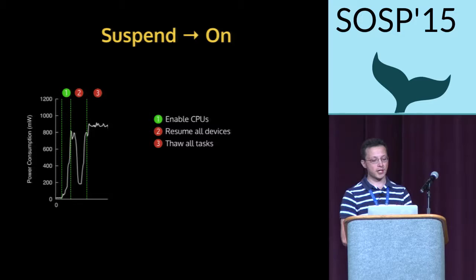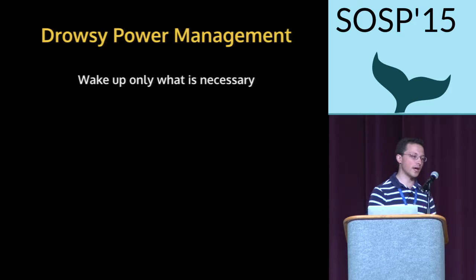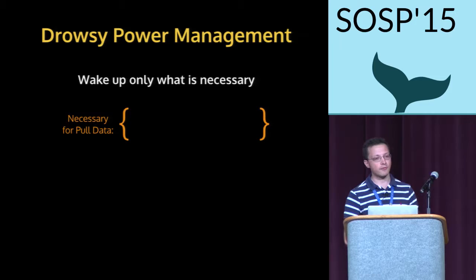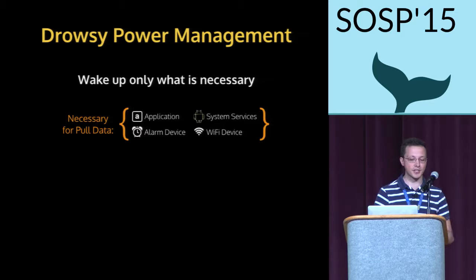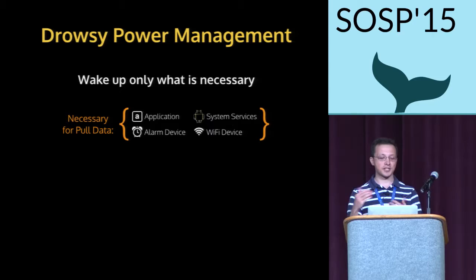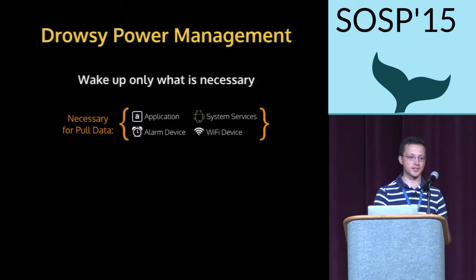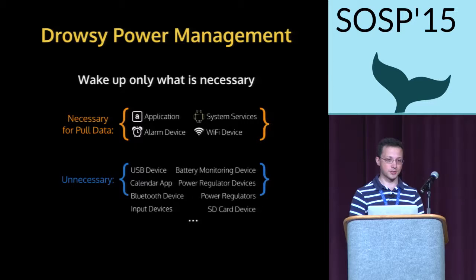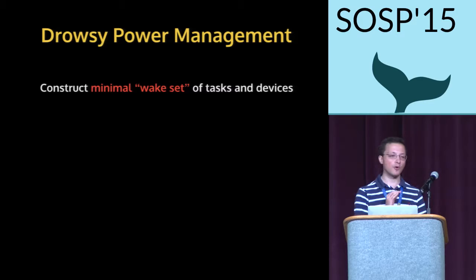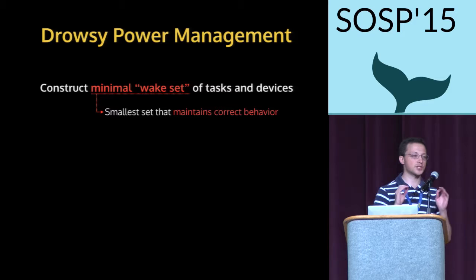Looking at the suspend-to-on transition, we see a similar trend: resuming all devices and thawing all tasks takes up the vast majority of time and energy. These observations directly lead us to Drowsy, where the key idea is that we should only wake up the tasks and devices that are necessary for what the event needs to do. For the pull data wake-up event, what's actually necessary? The application, some core system services, the alarm device to set a future alarm, and the Wi-Fi device for communication. In actuality, many unnecessary tasks and devices are woken up — only a small subset is related to the event.